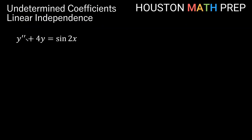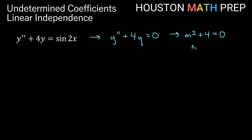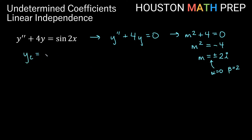Let's look at another example: y double prime plus 4y equals sine 2x. Solving the associated homogeneous equation, the characteristic polynomial is m squared plus 4 equals 0, giving m squared equals negative 4, so m equals plus or minus 2i. We get complex solutions with alpha equals 0 and beta equals 2, so our complementary function is c1 cosine 2x plus c2 sine 2x.